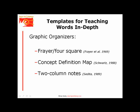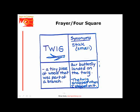For this step, the routine uses three graphic organizers: the frayer, sometimes called the foursquare; the concept definition map; and two-column notes. Classroom examples of each follow.